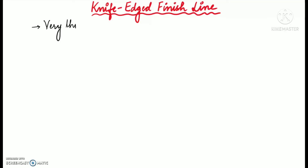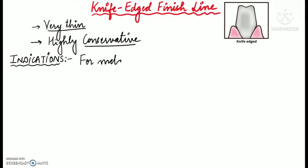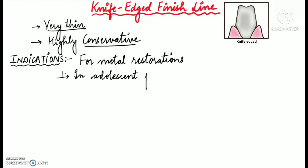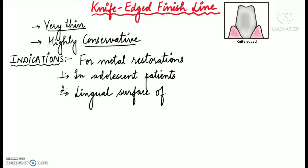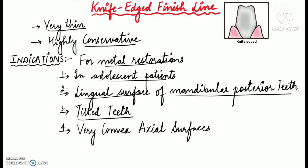Now let's start with the knife-edge finish line. The knife-edge finish line is a very thin finish line and it is highly conservative — very little tooth reduction is required, as we can see in this picture. The knife-edge finish line may be used in clinical situations where minimal tooth reduction is possible, for example for metal restorations in very young or adolescent patients. It can also be used on the lingual surface of mandibular posterior teeth, in tilted teeth, and in teeth having very convex axial surfaces.